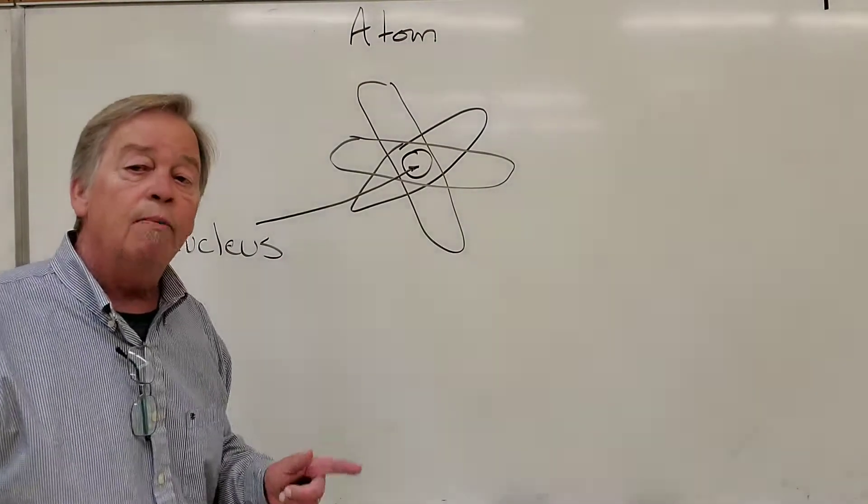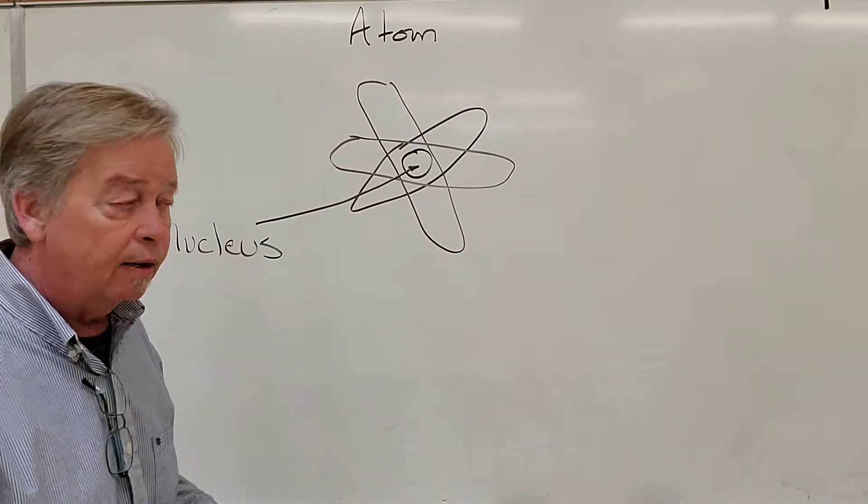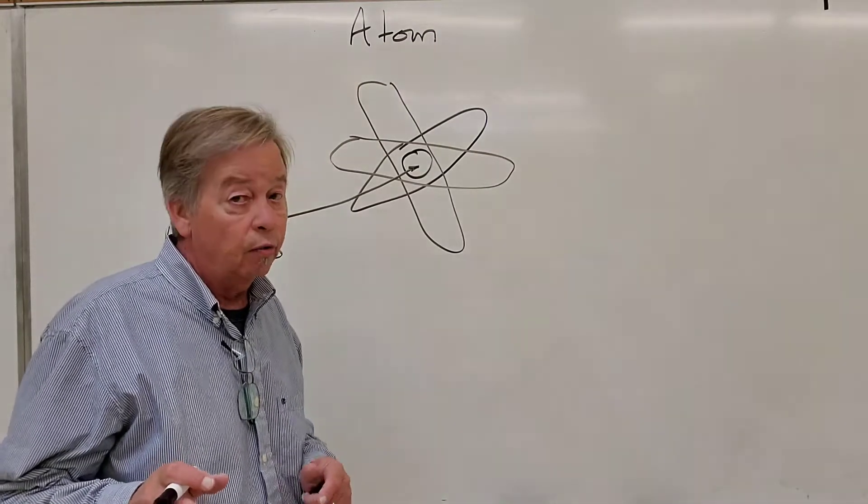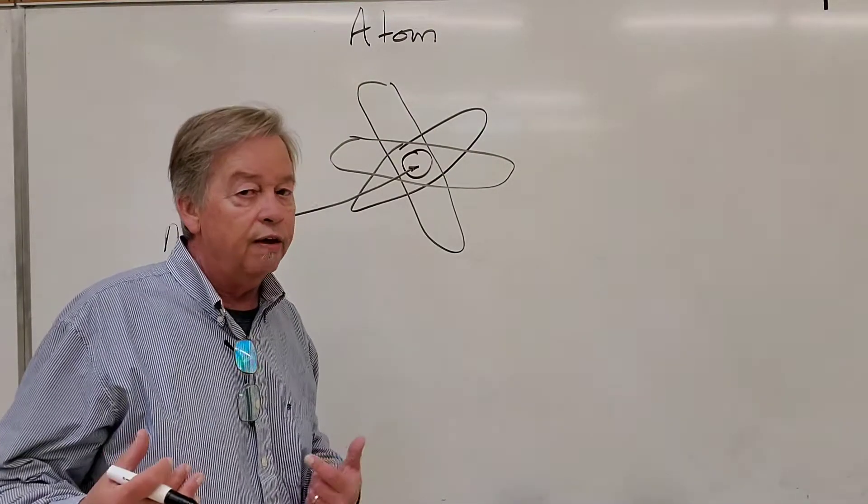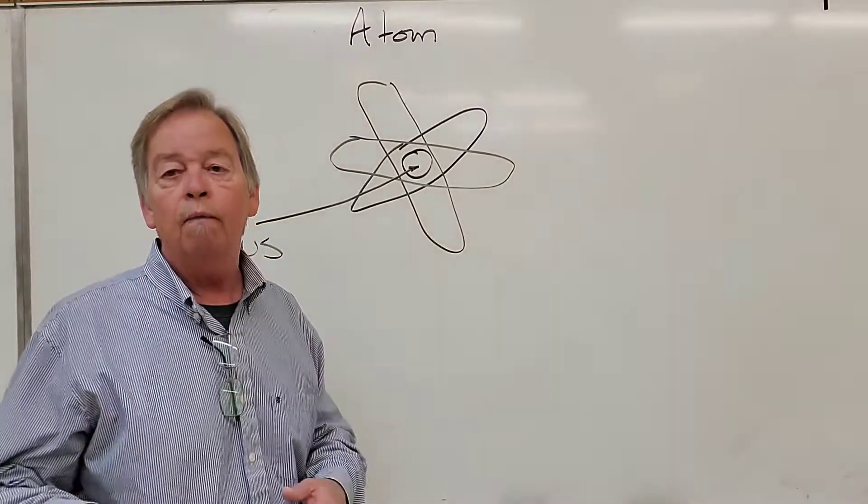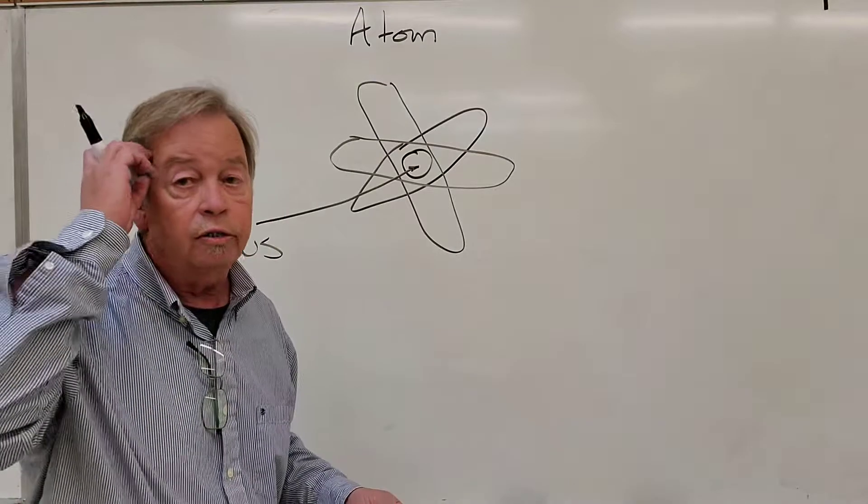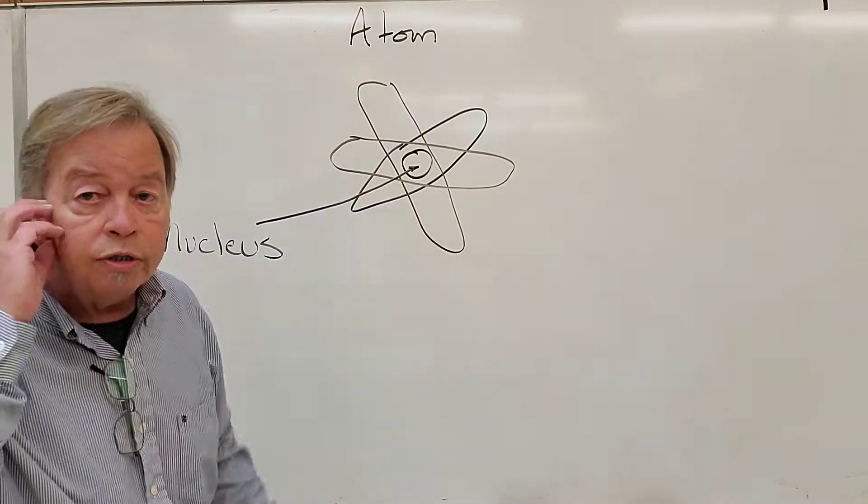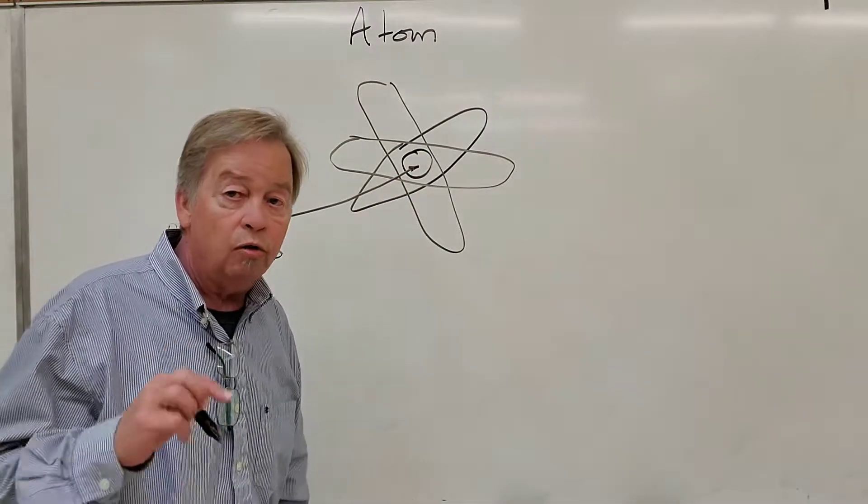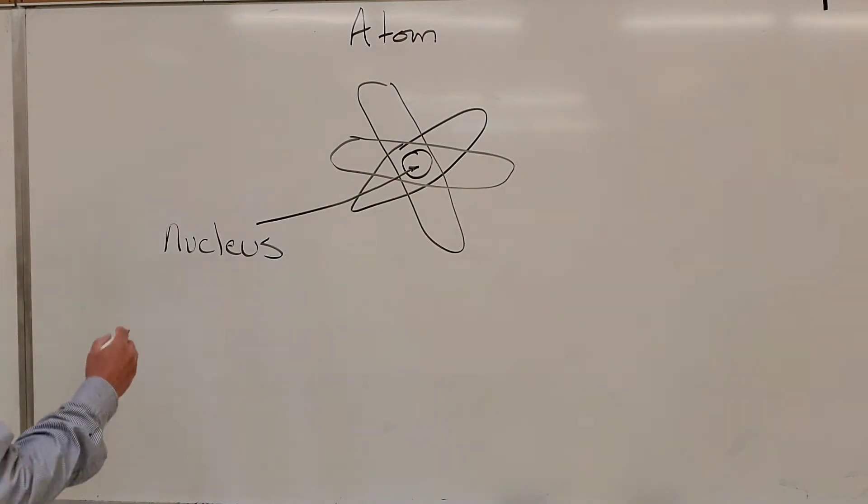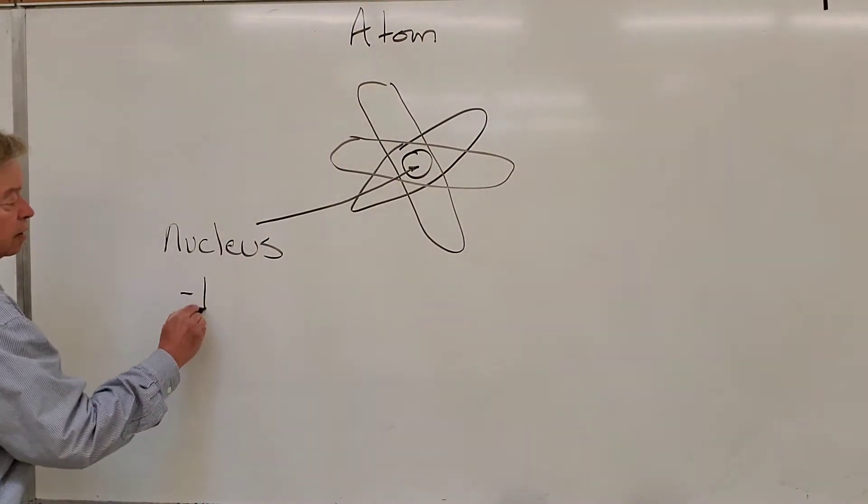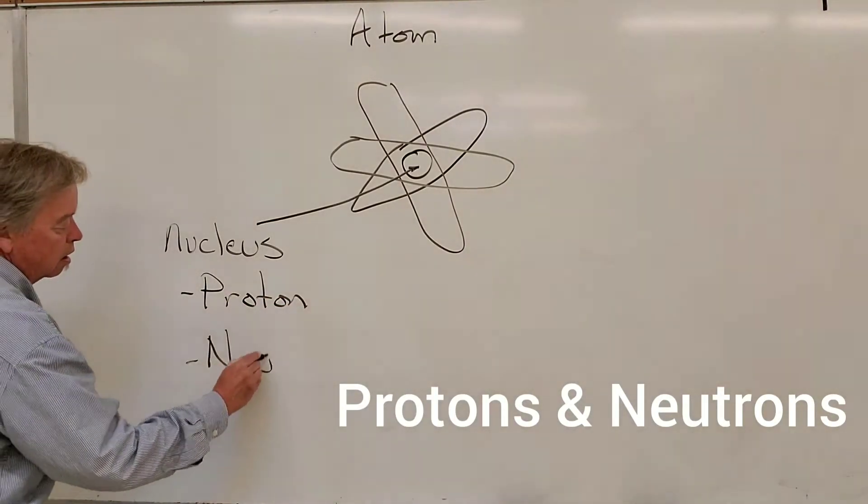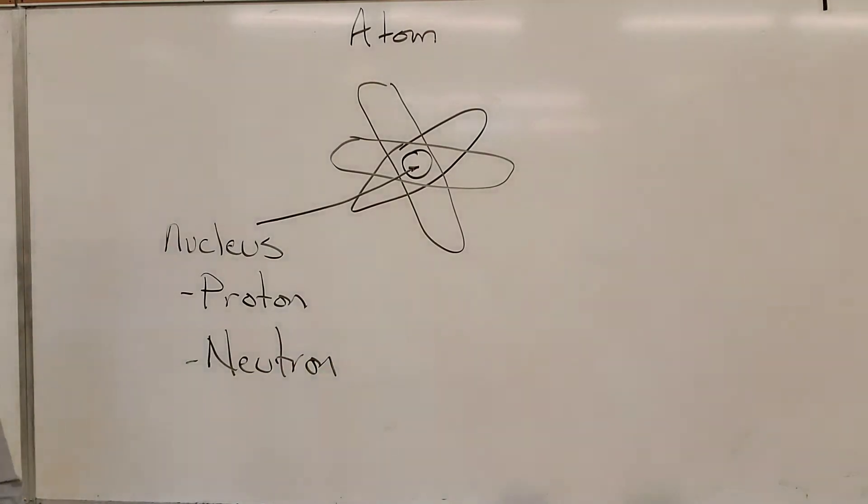Now, there are subatomic particles that make up the atom. And look, folks, understand there is a heck of a lot more atomic theory than what I'm going to share with you. This is just to give us the basic understanding so we can do well throughout this basic DC circuits course. So, in this nucleus, the center portion of the atom, are two subatomic particles that we want to be aware of. In the nucleus, there is the proton and the neutron.